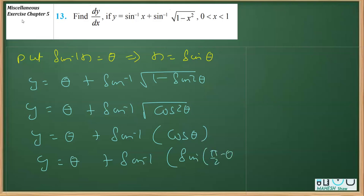Pi by 2 minus theta. So what I actually did, I converted cos theta in terms of sin. So we are left with y equals theta plus, this will give you sin inverse into sin pi by 2.